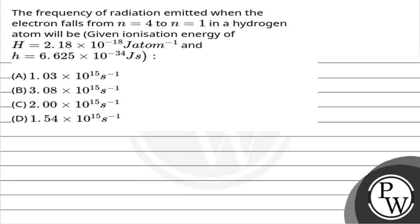Hello Bacho, let's read the question. The question says: the frequency of radiation emitted when the electron falls from N equals 4 to N equals 1 in a hydrogen atom will be given. Ionization energy of hydrogen is equal to 2.18 into 10 to the power minus 18 joule per atom, and H is equal to 6.625 into 10 to the power minus 34 joule second.